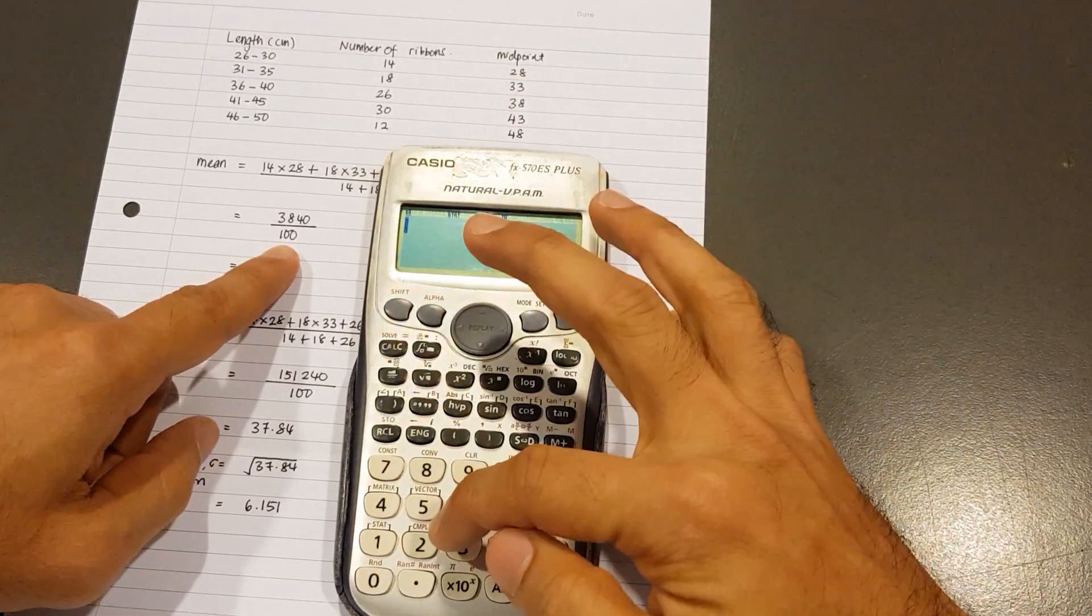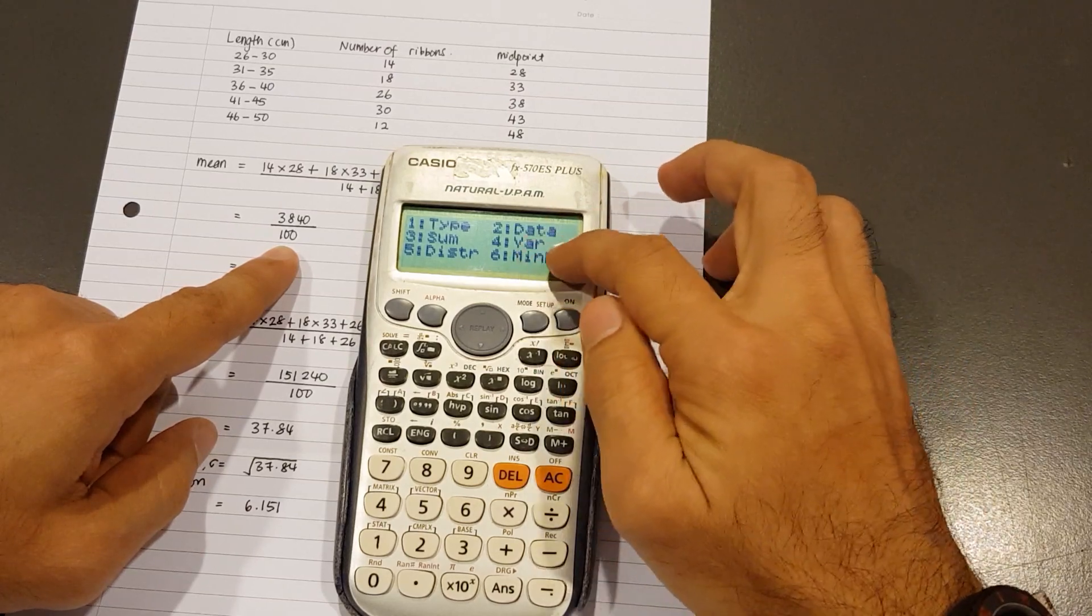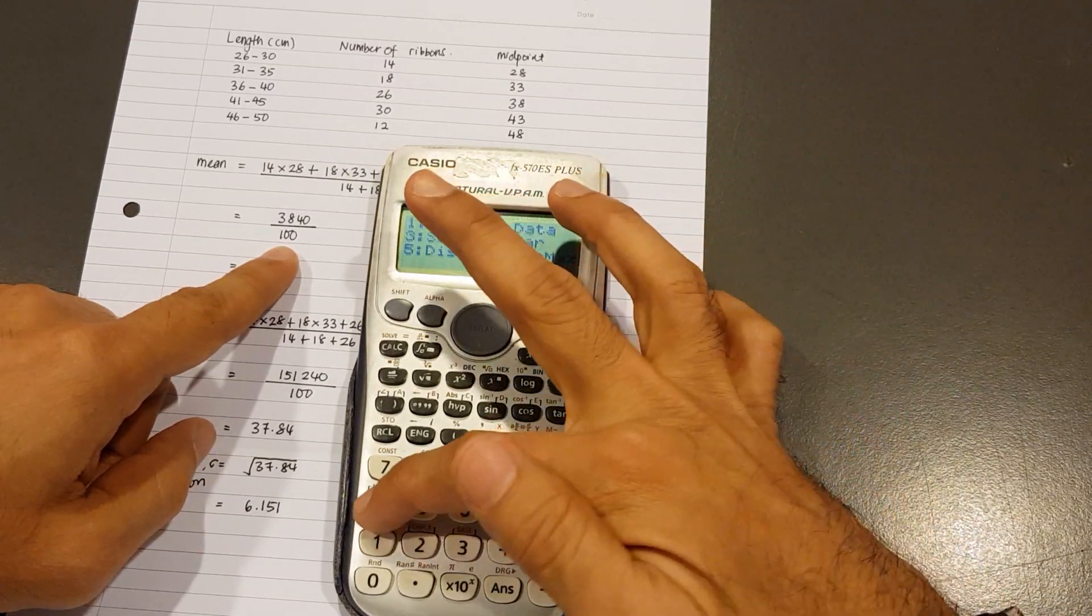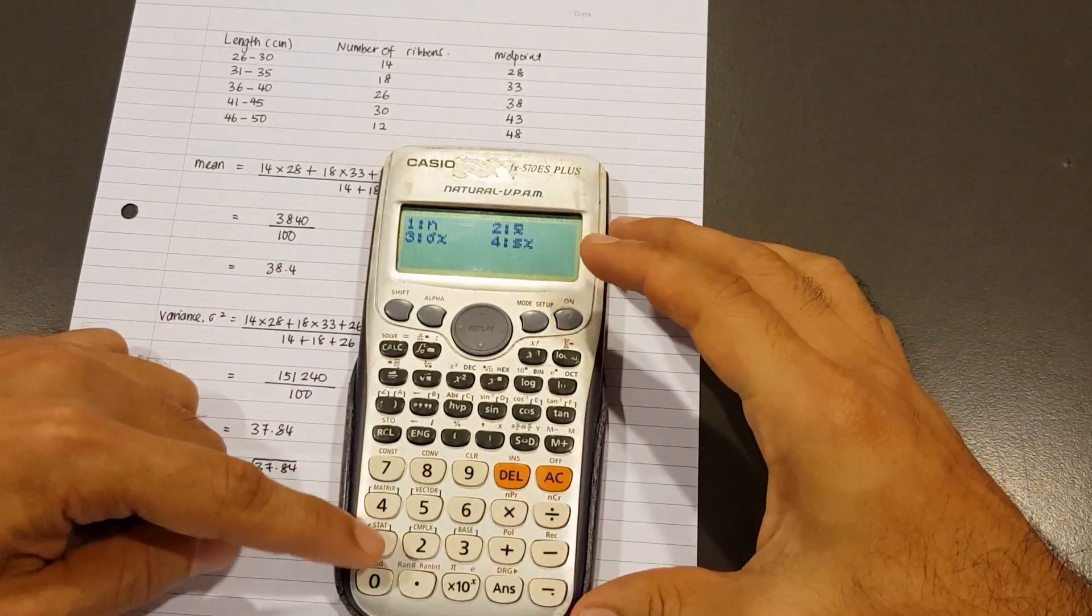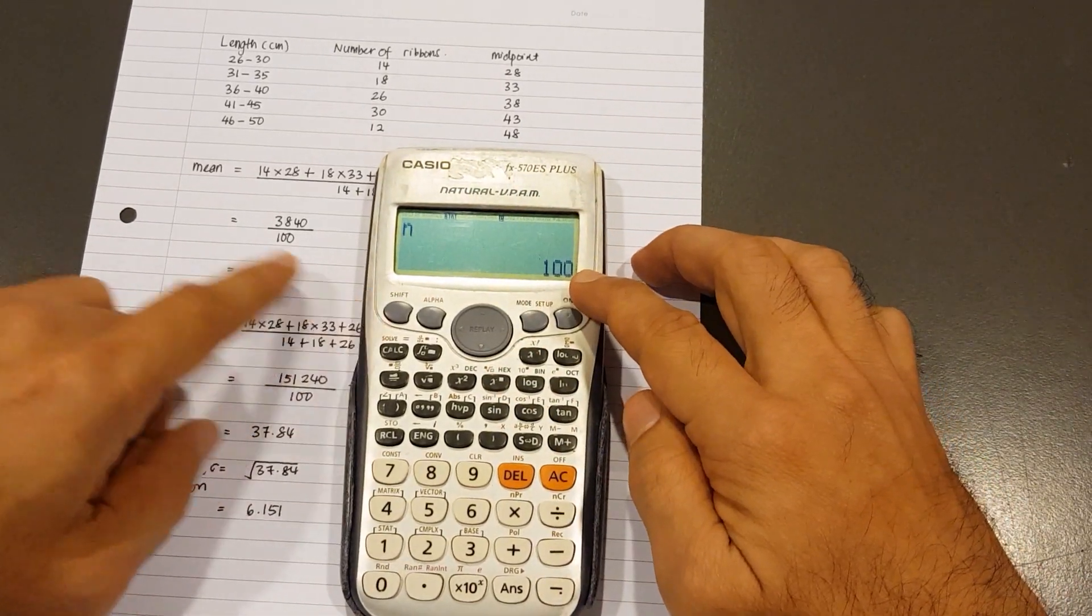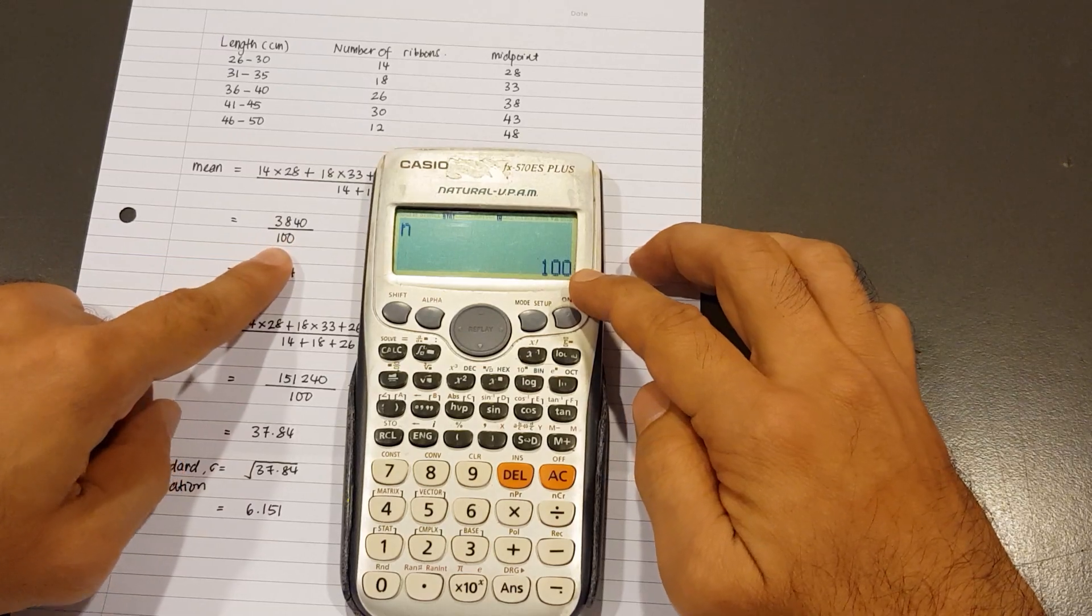But if you go to Shift 1 and go to number 4, we have it right there. That's number 1, N. If I type 1 and press equals, I get 100.